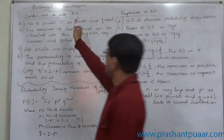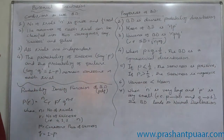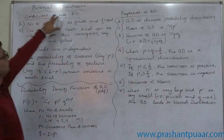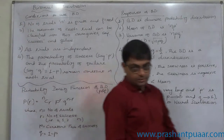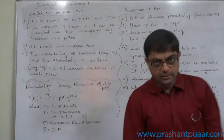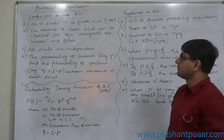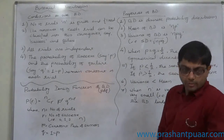The next topic in the discrete probability distributions is binomial distribution. The binomial distribution is also known as Bernoulli distribution because it was derived by the mathematician Jacob Bernoulli.